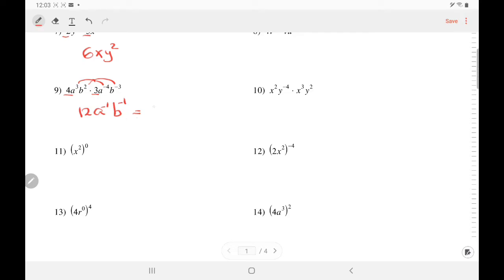A and B both have negative exponents. They are going to the denominator, but 12 was unaffected.